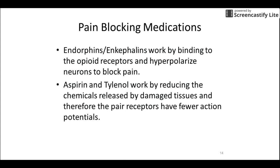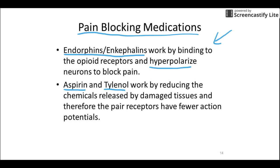We do have ways to block pain. Endorphins and enkephalins are our natural pain blockers — they hyperpolarize those neurons so even when stimulated they don't reach threshold, sending a lower frequency of action potentials and resulting in less pain. Aspirin and Tylenol work differently — they reduce the chemicals released by damaged tissues, so fewer chemicals reach the receptors. One approach shuts down the neuron's response; the other reduces the chemical signal. Both result in a weaker signal being sent to the brain.